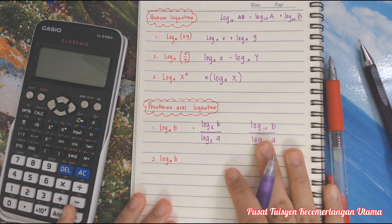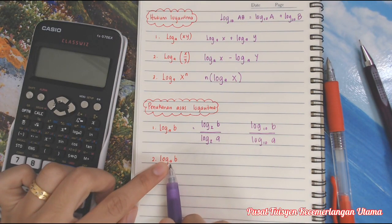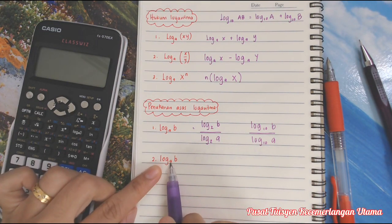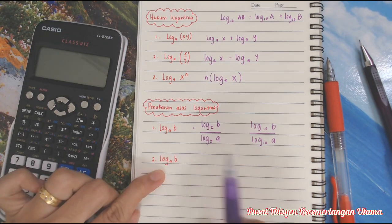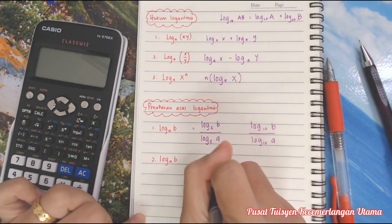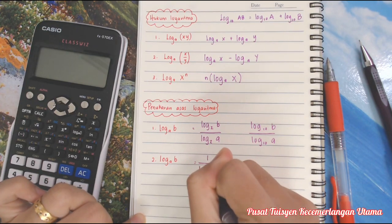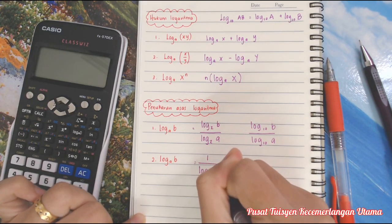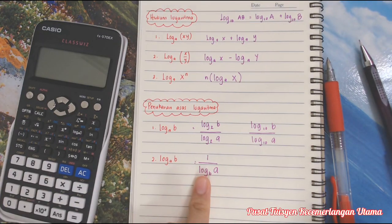Macam mana pula kalau awak nak tukarkan tiba-tiba awak nak jadikan yang ni log B. Macam mana nak tukar ni? Terbalikkan je. Cara dia jadi songsang. 1 over log B A. Dia jadi songsang, macam tu.